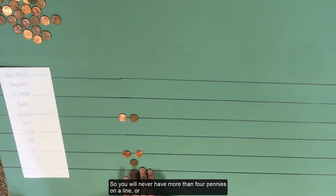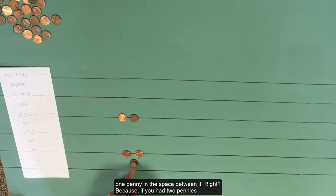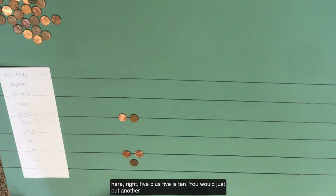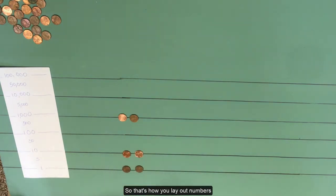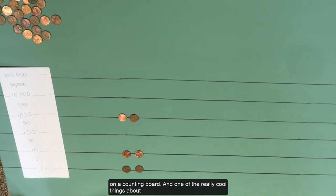So you will never have more than 4 pennies on the line or 1 penny in the space between it, right? Because if you had 2 pennies here, 5 plus 5 is 10, you would just put another penny on that 10s line. So that's how you lay out numbers on a counting board.